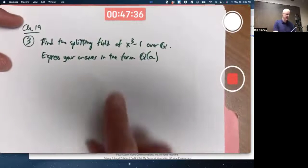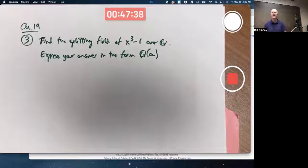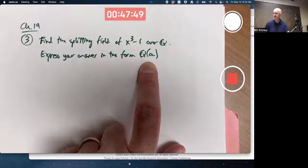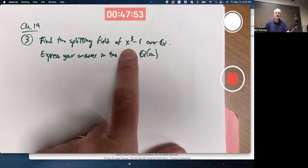So if I can find the roots of x cubed minus 1, I can just adjoin them to Q. And that's a splitting field for this polynomial over Q. So how do you find the roots of this?